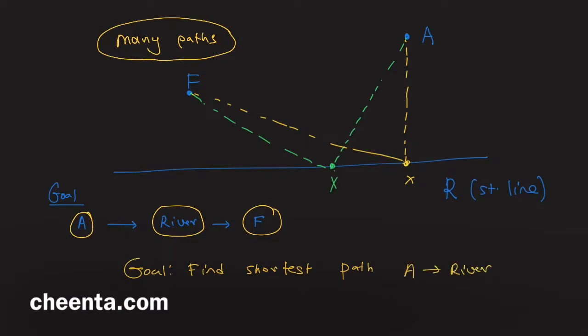Our goal is to find the shortest path from A to the river to the friend's house. You can pause the video here and give it a try, because this is a problem of a geometric transformation called reflection, and that's what we are going to learn in this video.